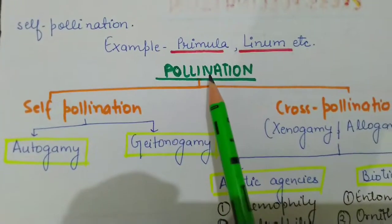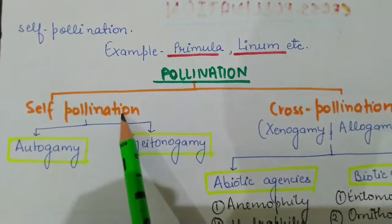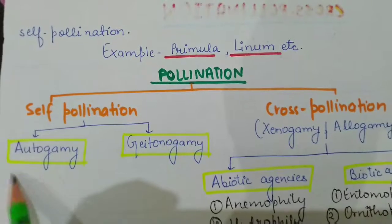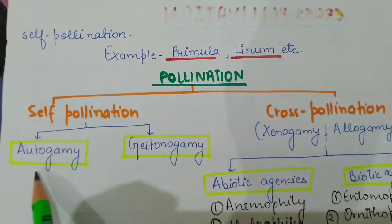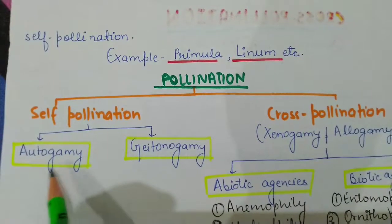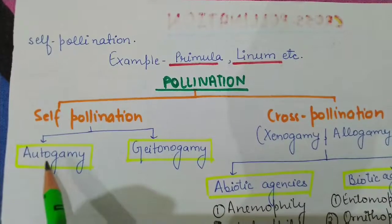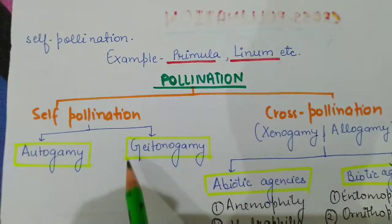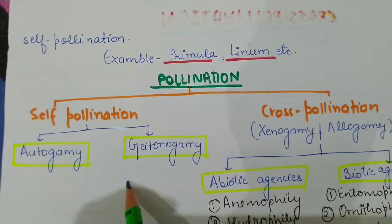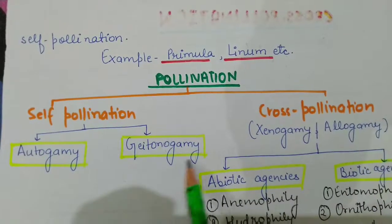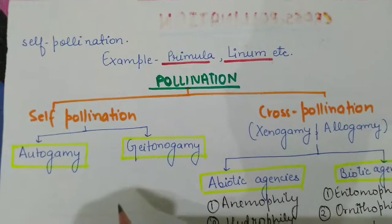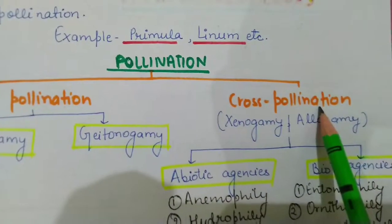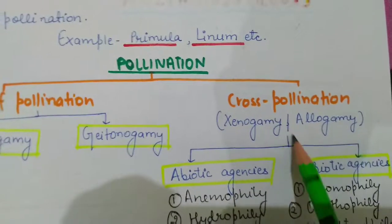To summarize pollination: there are two types — self pollination and cross pollination. Self pollination includes autogamy and geitonogamy. Autogamy occurs within a single bisexual flower via cleistogamy, homogamy, and bud pollination. Geitonogamy involves two different flowers on the same monoecious plant. Cross pollination, also known as xenogamy and allogamy, always occurs between flowers of different plants.